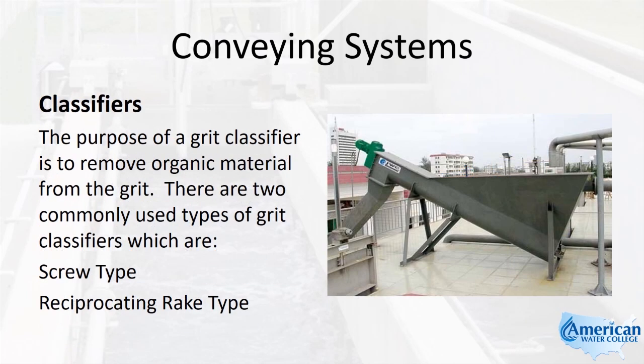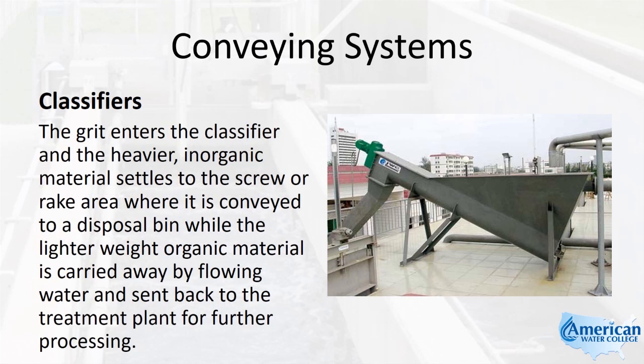The purpose of a grit classifier is to remove organic material from the grit. There are two commonly used types of grit classifiers: the screw type and the reciprocating rake type. The grit enters the classifier and the heavier inorganic material settles to the screw or rake area where it is conveyed to a disposal bin, while the lighter weight organic material is carried away by the flowing water and sent back to the treatment plant for further processing.